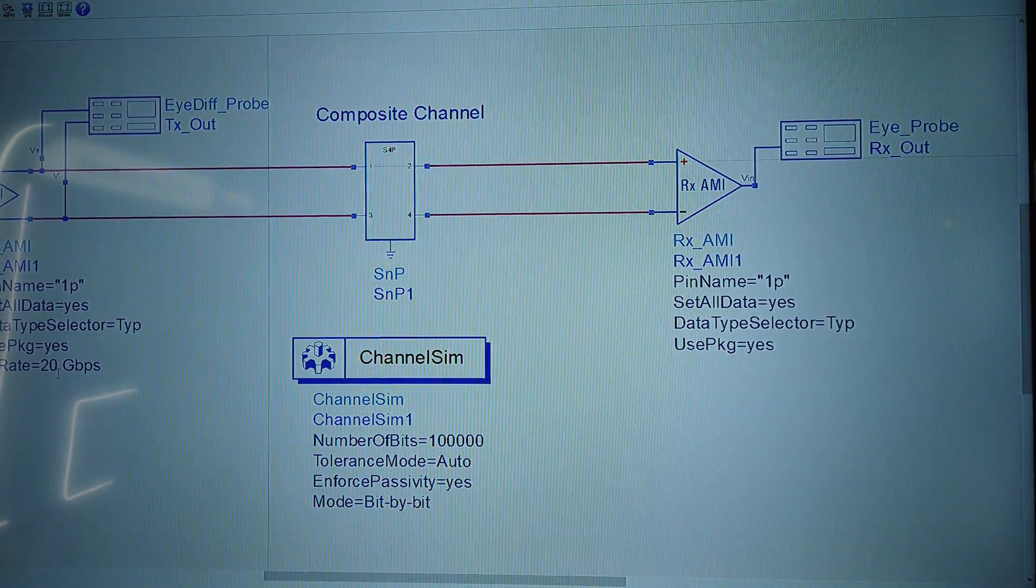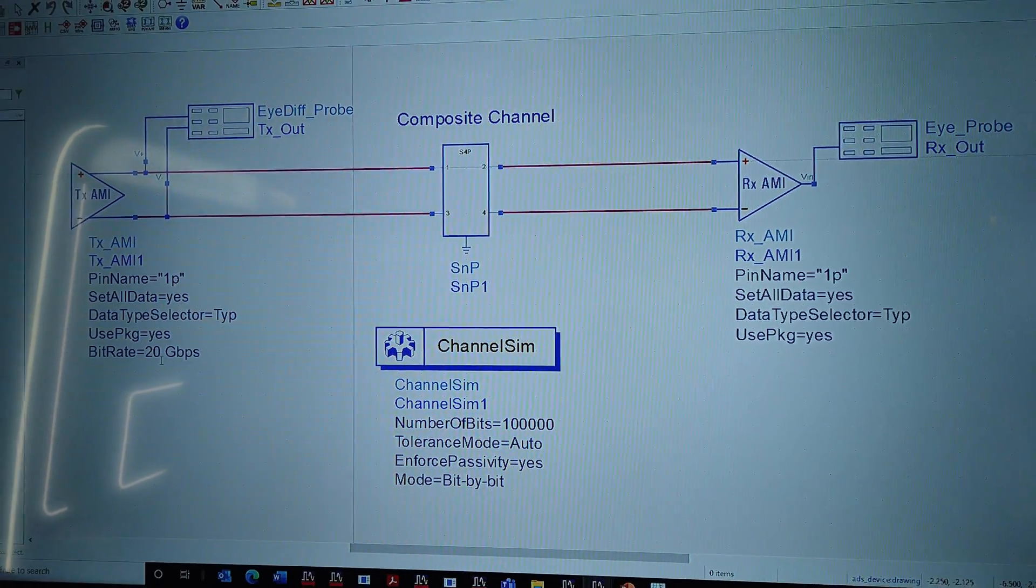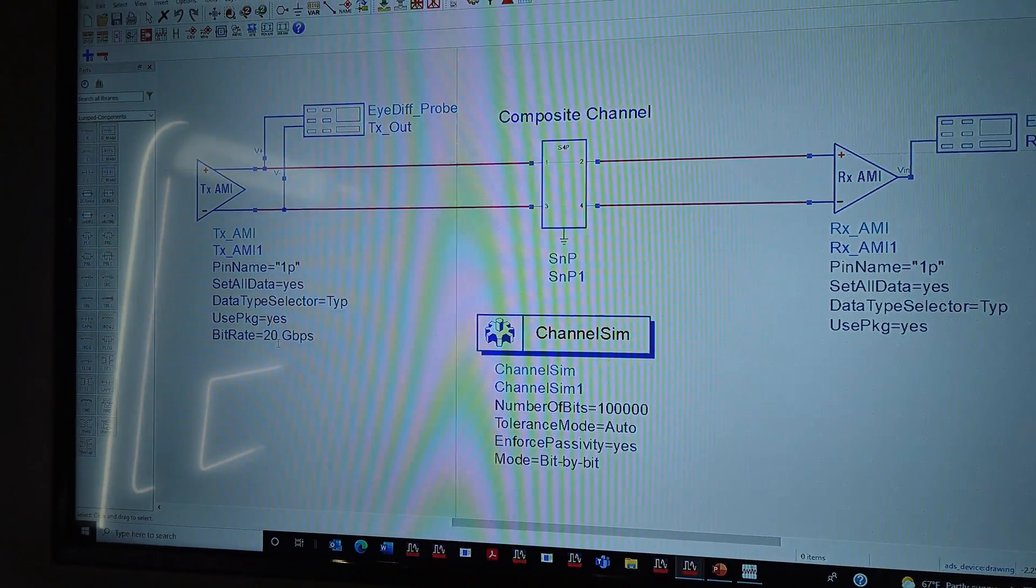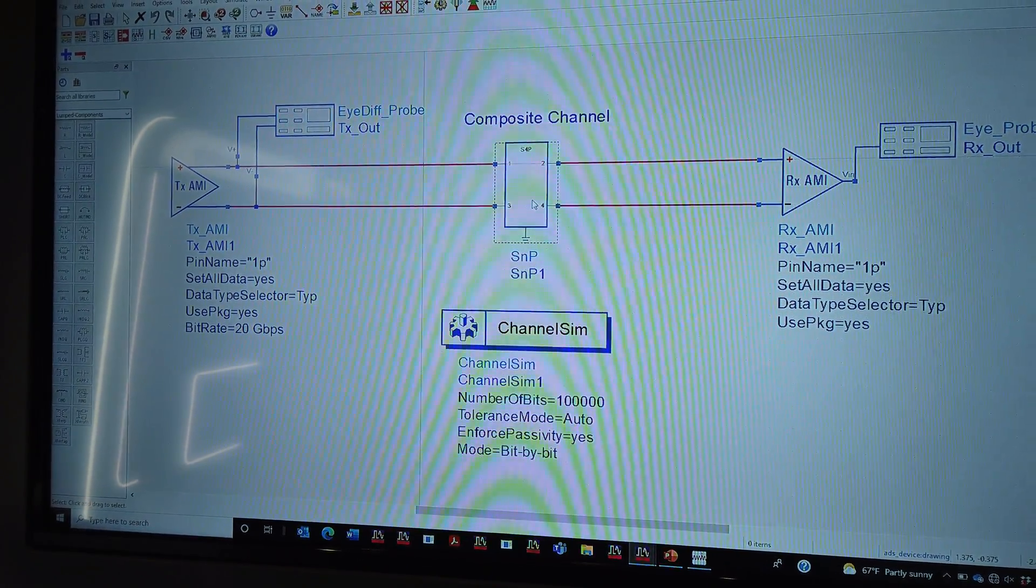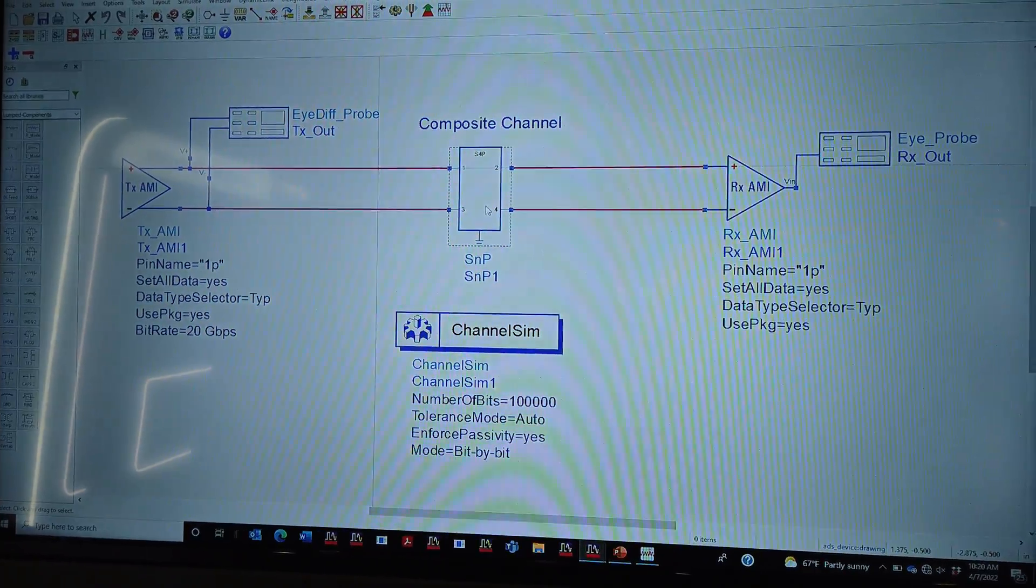You can see that we're running this at 20 gigabits per second, which is the data rate for USB 4 Gen 3. We have a composite channel that represents the behavior of the channel used. This is an S-parameter used for the simulation.